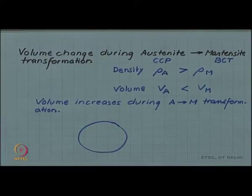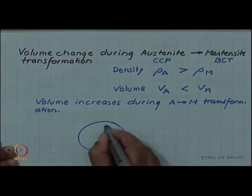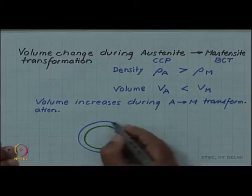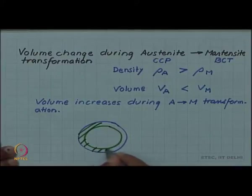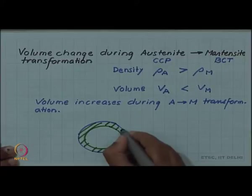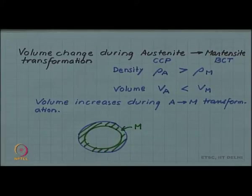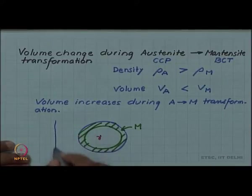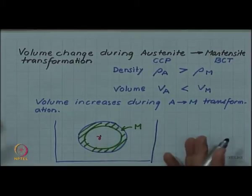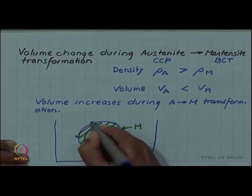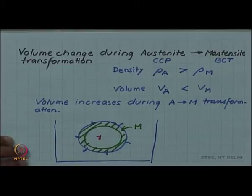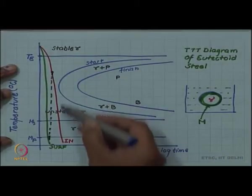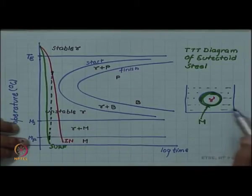This volume increase during austenite to martensite transformation is now going to cause some problem in our large component quenching. We saw that initially the outer shell which cooled faster formed martensite. This has formed martensite and this involved a volume increase, but the constraint for that increase was much less because it was in the quenching medium. Since the component was in quenching medium, martensite wanted to expand and there was space for it to expand at least outwardly. Outwardly there was no constraint for volume expansion.